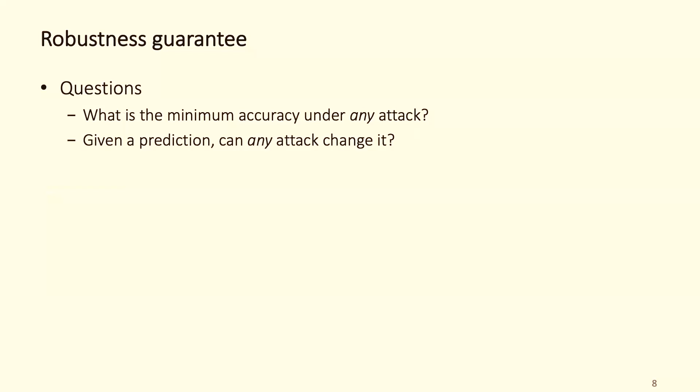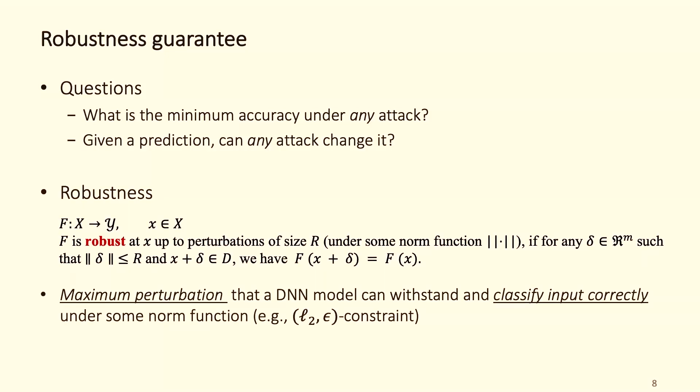The question we asked was: what is the minimum accuracy under any attack? Or, given a prediction, can any attack change it? These two questions we want to answer. Robustness in this sense has a different definition, which is we want to find the maximum perturbation that a DNN model can be designed and classify correctly under some specific norm function, to find the size of that attack.